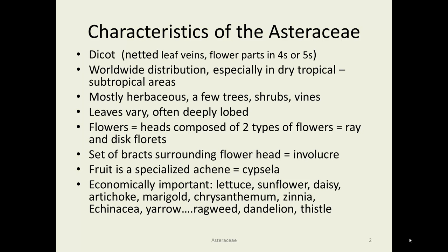These are dicots with worldwide distribution, especially in dry, tropical, and warm areas. They're mostly herbaceous. The leaves vary but they often are deeply lobed. The flower heads are relatively unique in the plant world — they're composed of two types of flowers: ray flowers and disc flowers on what's called a receptacle. They also have a unique set of bracts surrounding the flower head, layered and called an involucre. The fruit is a specialized achene called a cypsela.